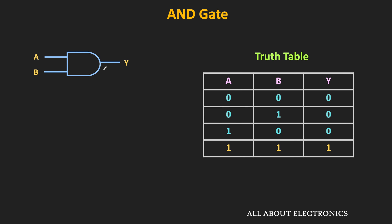Here is the truth table of the two-input AND gate. Each input can have only two values — logic 0 or logic 1 — so for two inputs there are four different possibilities: both inputs logic 0, both logic 1, or the two cases where inputs differ. The output is logic 1 only when both inputs are high; if any input is logic 0, the output is also logic 0. The Boolean expression is Y = AB. That is the two-input AND gate.